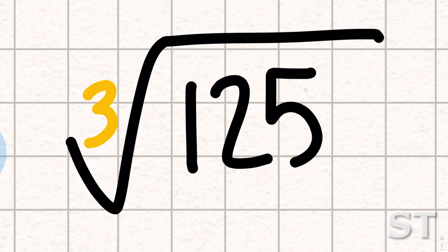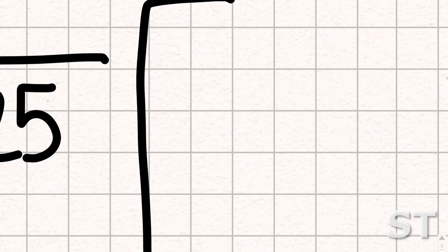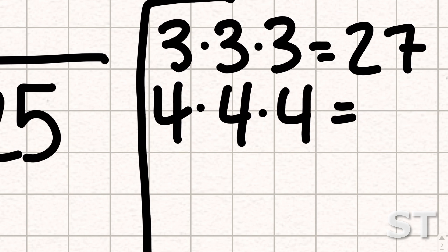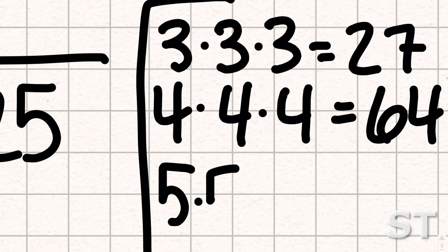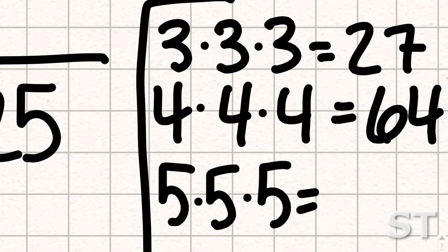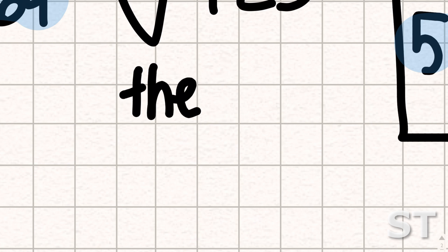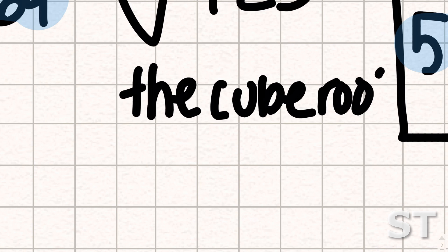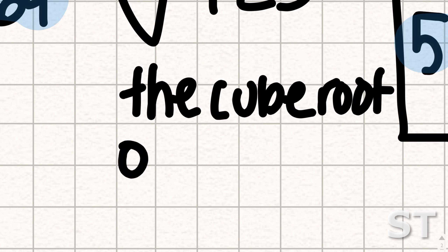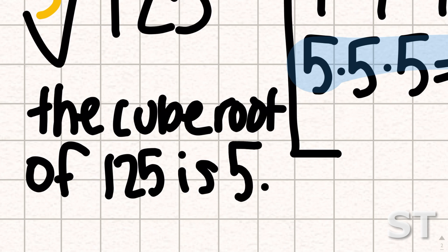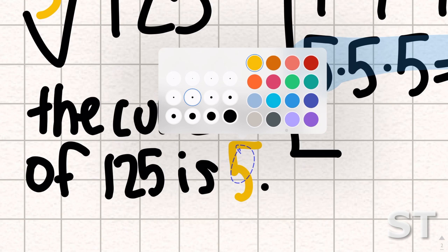So we're going to do 125. With my little bracket: 3 times 3 times 3 equals 27; 4 times 4 times 4 equals 64; 5 times 5 times 5 equals your grand one-two-five — one hundred and twenty-five. The cube root of 125 is 5. There we go.